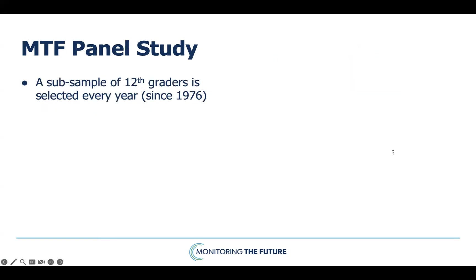The MTF panel study extends the work of the MTF main school-based surveys by following a subsample of each 12th grade cohort across the life course. The final year of high school is a key moment in the transition from adolescence to adulthood, and is the final point at which a reasonably good national sample of an age-specific cohort can be drawn from schools, making it a key base year for longitudinal surveys. Beginning with the class of 1976, a subsample of around 2,400 graduating high school seniors are randomly selected every year. Each cohort's follow-up sample is split into two random subsamples surveyed in alternate years; one subsample starts their surveys at age 19, one year after leaving high school.